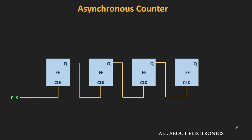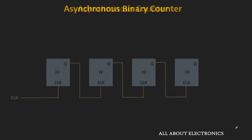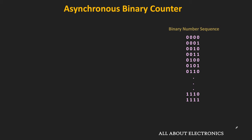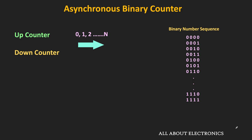First, we will see how to design the asynchronous binary counters. The output of the binary counter changes in the binary sequence, and there are two types of binary counters: the up counter and the down counter. The up counter counts from 0 to n, while the down counter counts from n to 0.